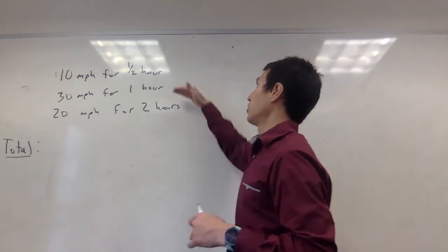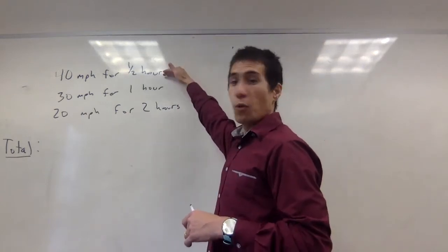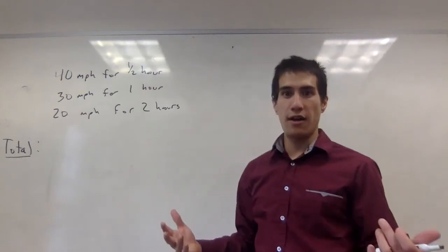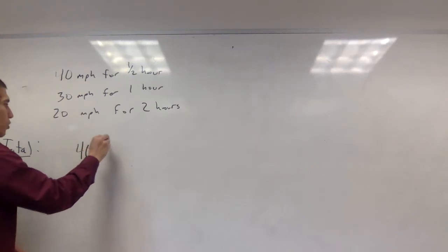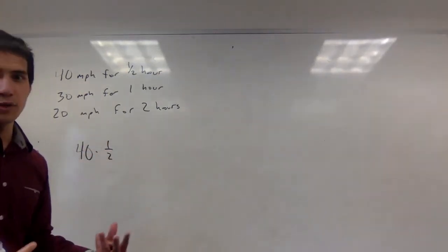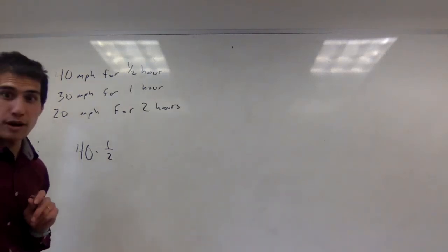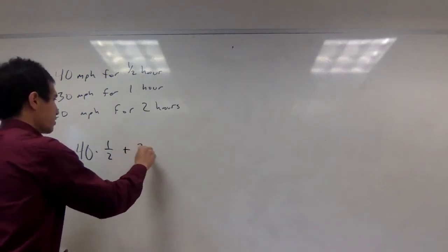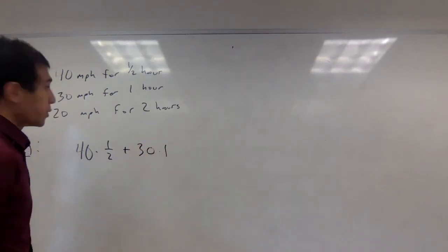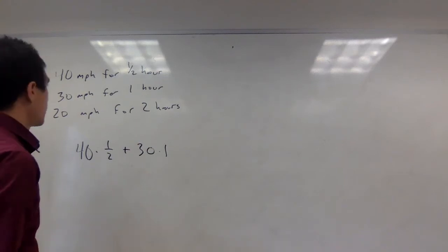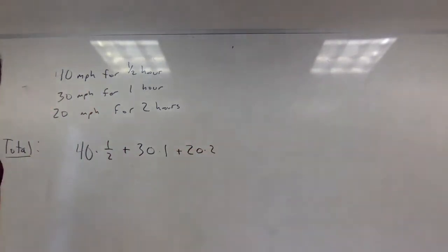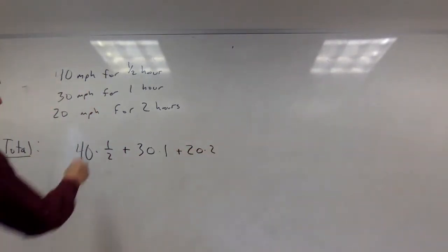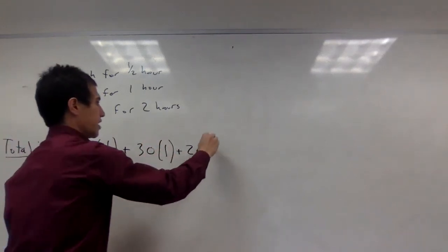This is very easy to calculate. In the first half hour we drove 40 miles an hour for a half hour, so we drove 20 miles — I'm going to write that as 40 times one half. Then we drove 30 miles per hour for one hour, so we drove 30 miles, written as 30 times 1. Then we drove 20 miles per hour for two hours, so we drove 40 miles, written as 20 times 2.